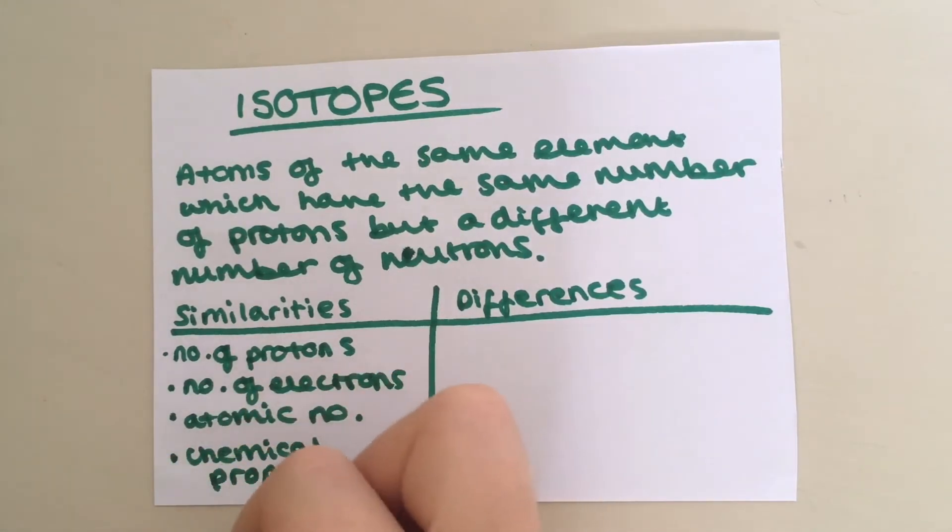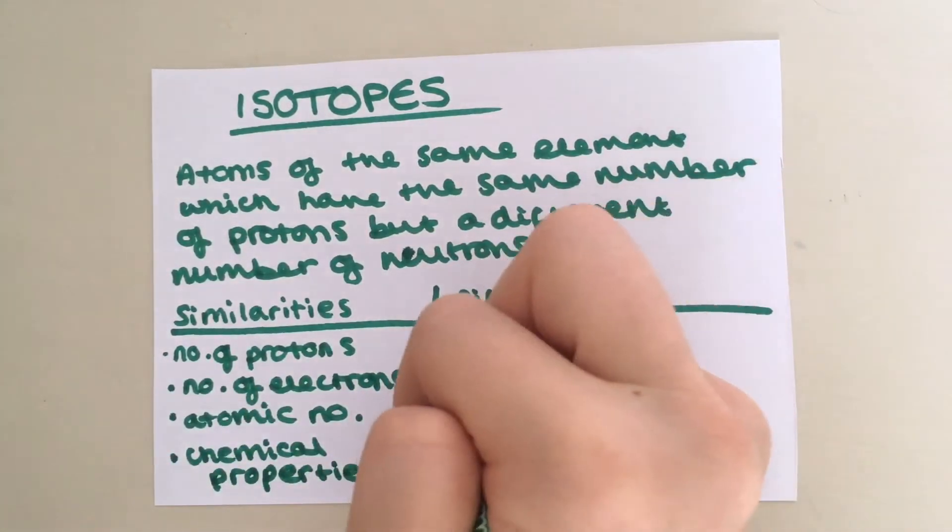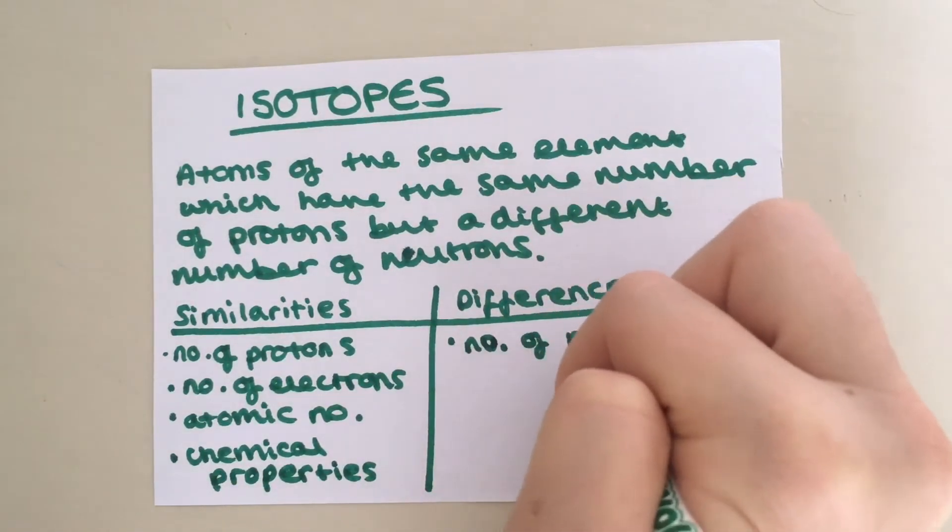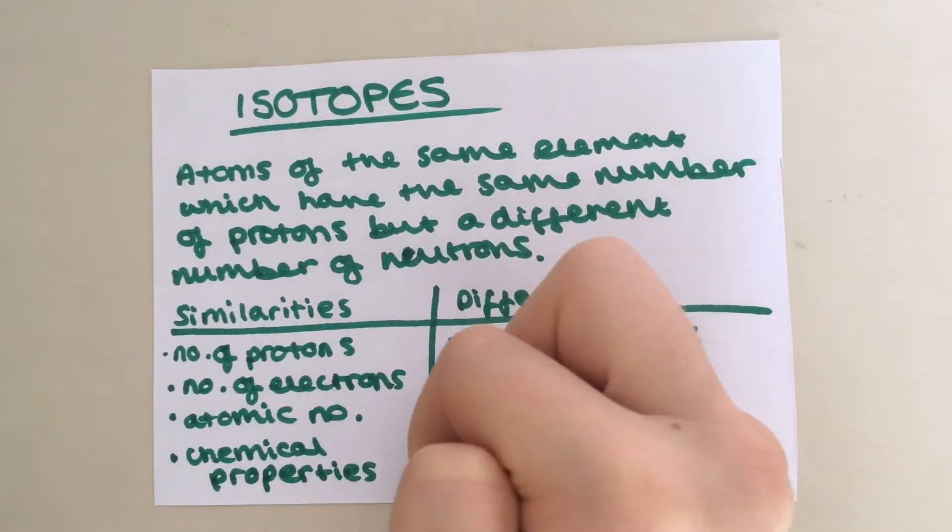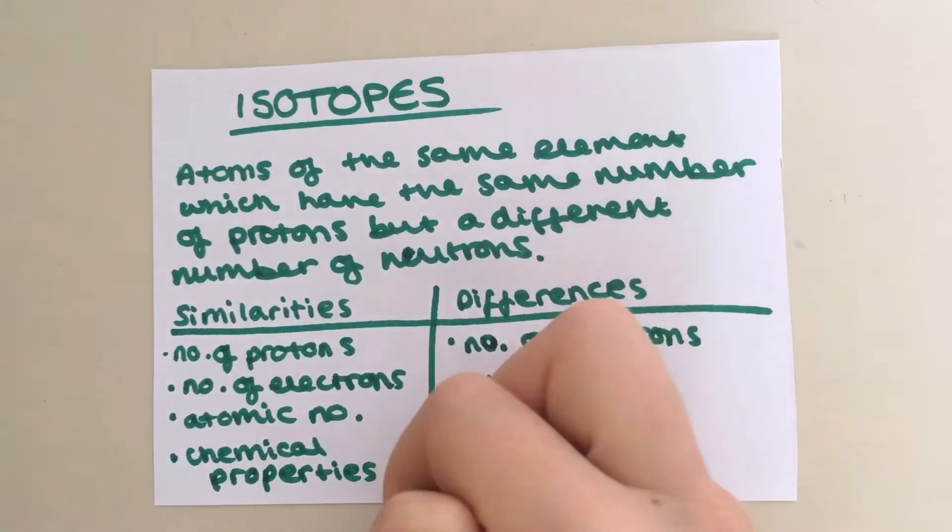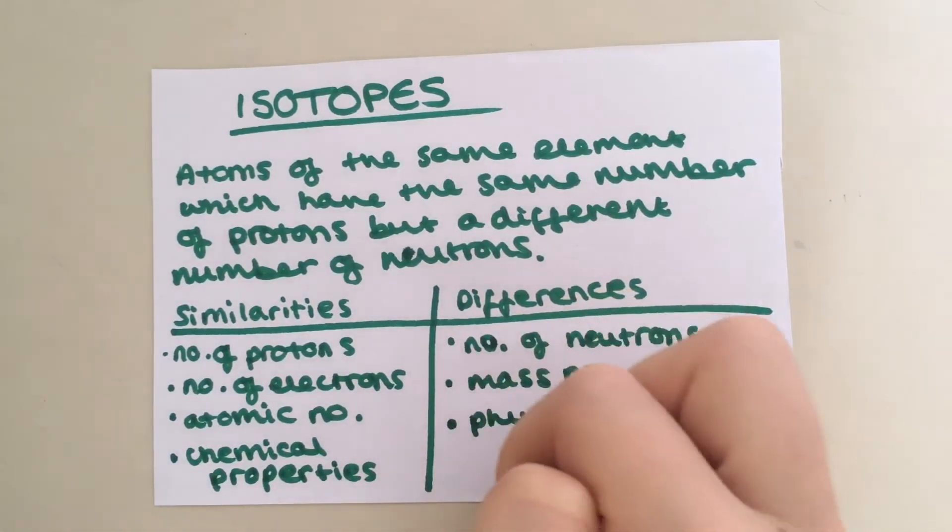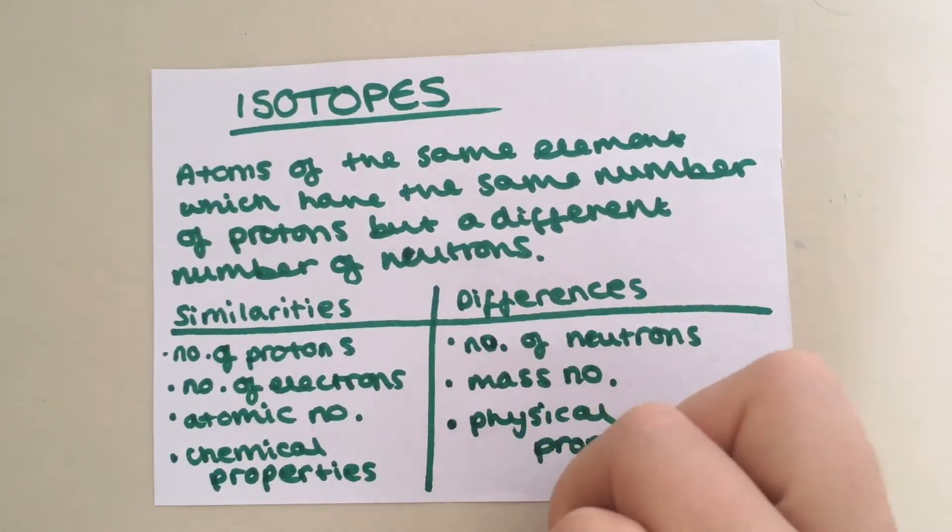However, there are also differences between isotopes of the same element. Most notably, the number of neutrons, but also the mass number because neutrons help to make up the mass of an atom and physical properties can also differ.